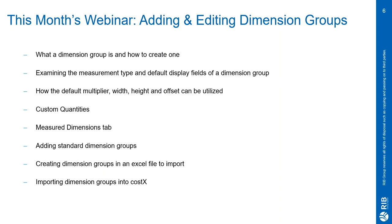This month, we'll be going through the basics you need to know for adding and editing dimension groups. We will look at what a dimension group is and how to create one, examining the measurement type and default display fields, how the default multiplier, width, height and offset can be utilised, custom quantities, the measured dimensions tab, adding standard dimension groups, creating dimension groups in an Excel file to import, and finally importing dimension groups into CostX. So now we'll switch over to i2CostX and get started.